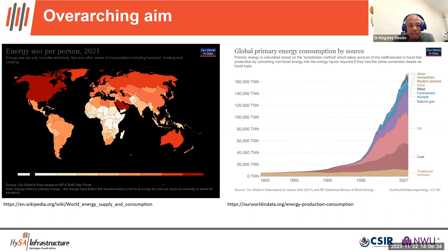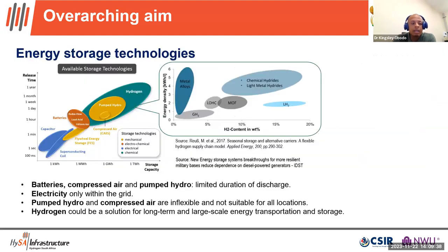If you look at global primary energy sources, most come from oil, coal, and traditional biomass, with very few from renewables — but this map is drastically changing. If we can generate renewable energy, what technologies do we have to store it? We have battery technology, pumped hydrogen, and compressed air, but these are not very flexible. Hydrogen could be a solution for large-scale and long-term storage solutions.